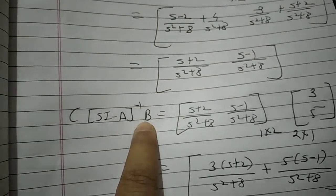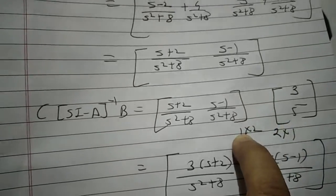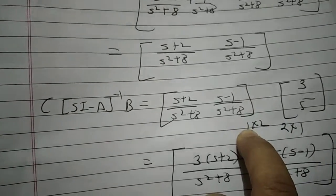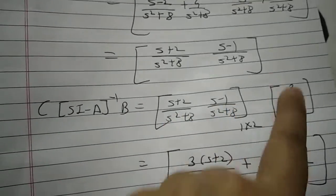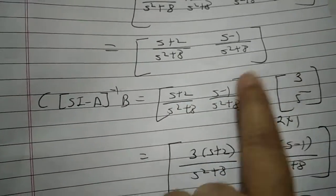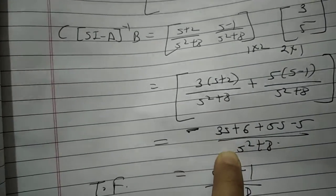This you have to multiply with B. What is B? B is 3, 5. So this is 3, 5. This has dimension 1 by 2, 2 by 1. That means you are going to get output 1 by 1. So how to do multiplication? Again row and column. This multiplied by this plus this multiplied by this. After solving you will get this one.